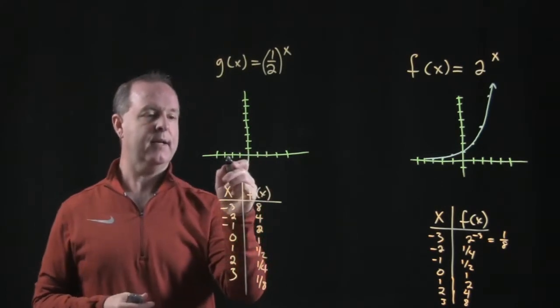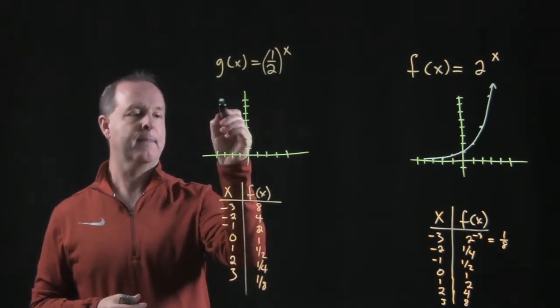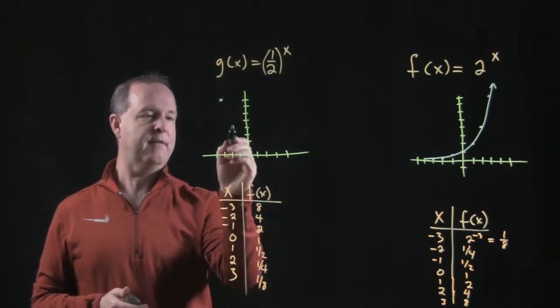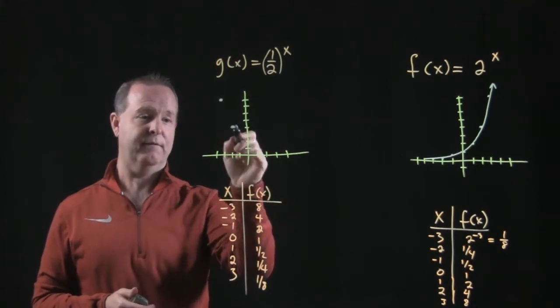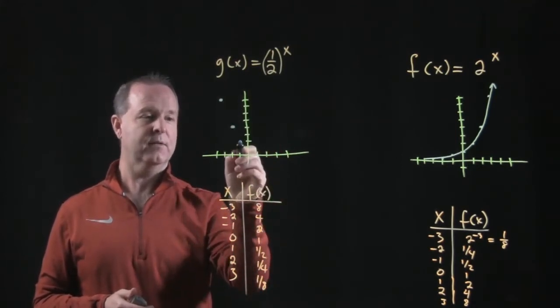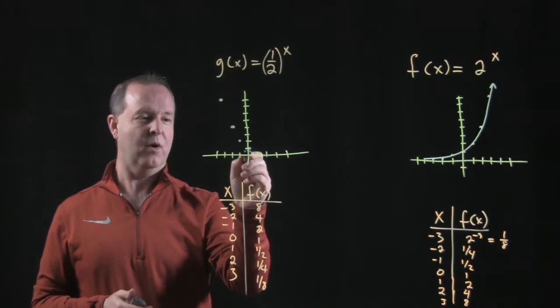So over at negative 3, we have a value up at 8. Negative 2, the value is half the distance, which is a 4. Interesting that it's half the distance, not 8 to 4. The next one is to 2. Half of 2 is a 1.